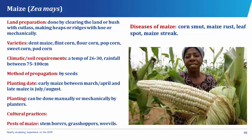Zea mays or maize has different varieties which include the dent maize, the flint corn, the flour corn, the popcorn, the sweet corn, and the pod corn. Maize requires a temperature of 26 to 30 degrees centigrade. It also needs rainfall between 75 centimeters to 100 centimeters per annum, as well as a well-drained sandy loamy soil of pH 6 to 7. The method of propagation of maize is by seeds.